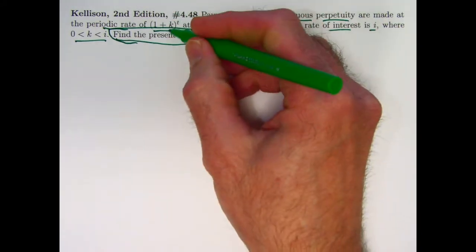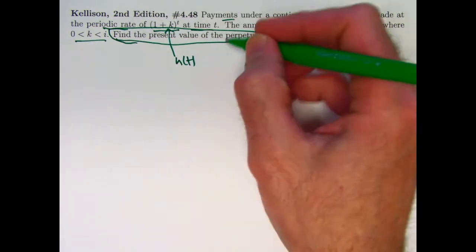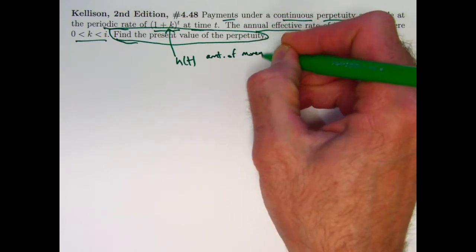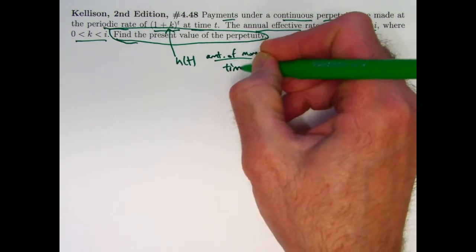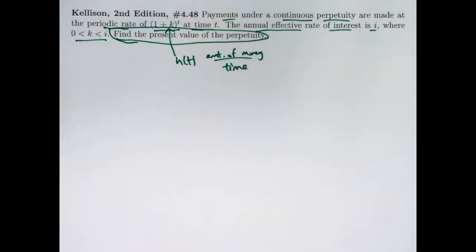We once again have a cash flow h of t representing an amount of money per unit time. Don't be thrown off by the word periodic here. This is not a periodic function. They mean this is a periodic rate in the sense that it's being compounded like an annual rate or monthly rate. It's continuous, an instantaneous thing at a given moment in time.